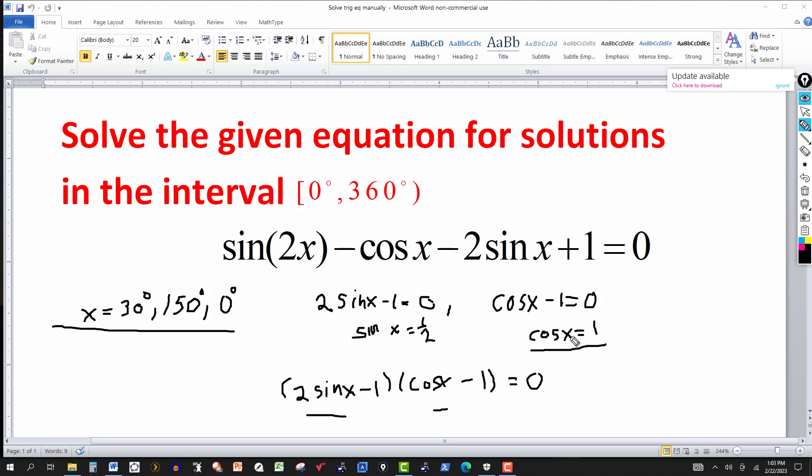Obviously, the cosine of 360 is also one. But this interval includes zero, but doesn't include the 360 because it has parentheses here. So you don't give 360 as your solution.